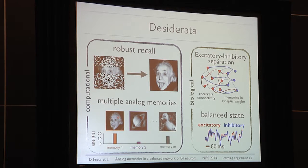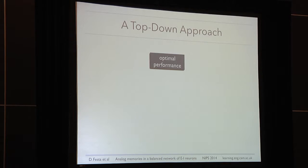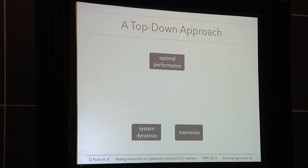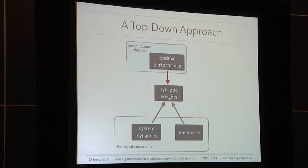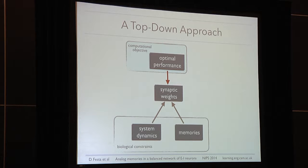There are many models that study auto-associative memories, starting from the seminal work by John Hopfield, who will later speak at this same conference. However, all these models cannot address all these features in a unitary way. So we addressed this problem with a slightly different, top-down approach. We start with an algorithm that ensures the capacity of embedding multiple memories on an analog scale, then impose system dynamics and a set of memories, and the interplay of the three determines the synaptic weights. Robustness and analog memories are granted by the optimal algorithm, while the choice of dynamics and parameters ensures biological constraints are respected.